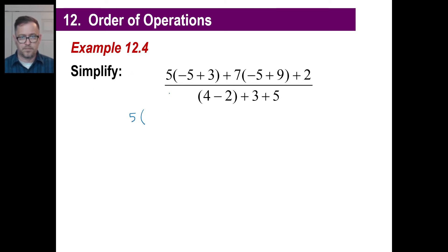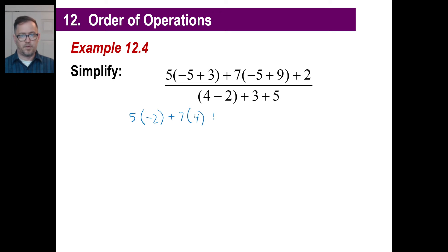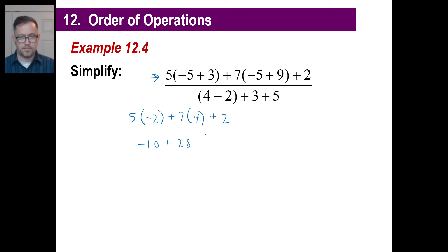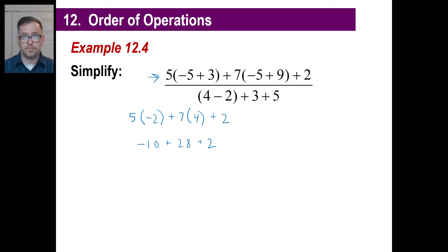Keep the 5. Negative 5 plus 3 is negative 2. Plus 7. Negative 5 plus 9 is 4. Plus 2. Now finish it up: 5 times negative 2 is negative 10. Positive 7 times 4 is 28. Plus 2. So we have negative 10 plus 28 plus 2: go 28 plus 2 is 30, then 30 minus 10 is 20. We have 20 for the numerator.